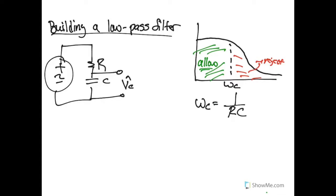We have a free choice of what R and C might be, and we're really only limited by the components we have at hand. So let's say that we wanted to build a low-pass filter where its cutoff was 100 Hz.